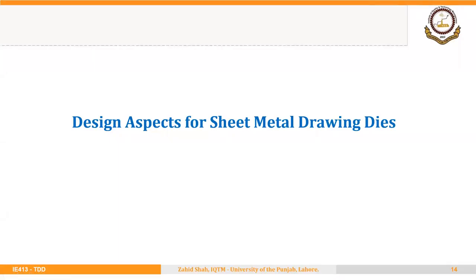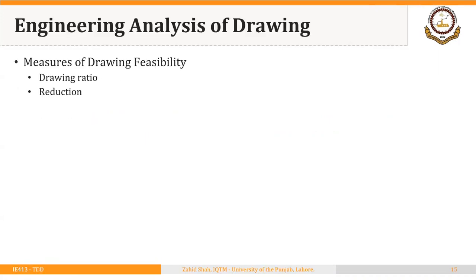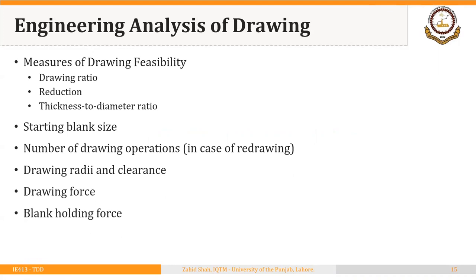Welcome back. Now we are going to start a discussion on design aspects for the sheet metal drawing process and sheet metal drawing dies. There are a number of factors that we can discuss in our discussion on engineering analysis of the deep drawing process, and they include measures of drawing feasibility. We will discuss three measures: drawing ratio, reduction, and thickness-to-diameter ratio.